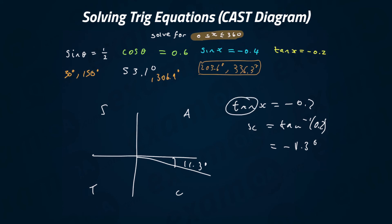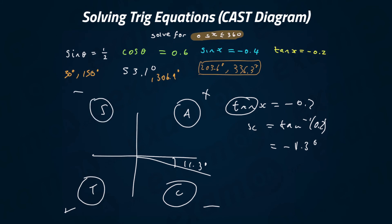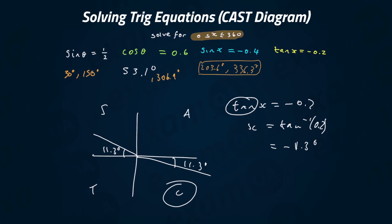We start from the positive x-axis and go clockwise because it's negative — here is 11.3 degrees. We were working with tan but ended up in the cos region. For tan, 'all' and 'tan' are positive; cos and sin are negative. Since we ended up in a negative quadrant, we go to the other negative quadrant and draw 11.3 degrees from the x-axis. Notice that the two lines form a straight line.